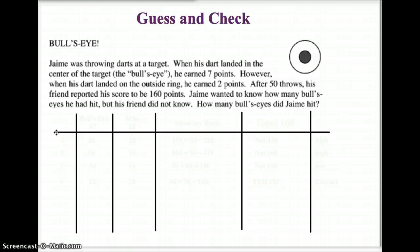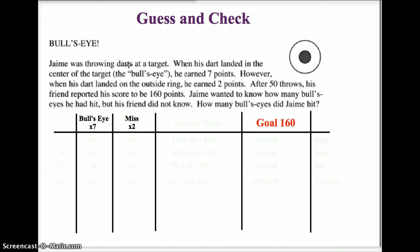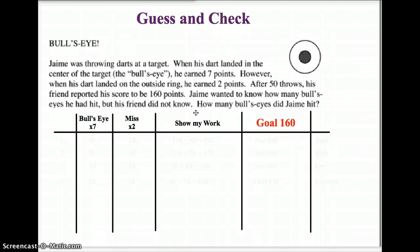It's a very nice way to organize your work. I know that my goal is to get to 160 points. I also know that if I get a bullseye I get 7 points, and if I miss the target I still get 2 points. And right here in the middle I'm going to show my work. You're going to understand that Mr. Anderson likes you to show your work. In fact, on tests coming up, if you do not show your work, you will fail. It's as simple as that.